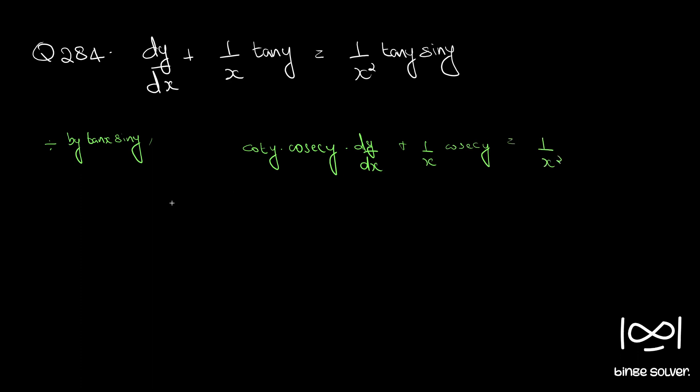Now if you put v equal to cosec y, so let's put minus cosec y, then we have dv/dx is equal to minus cosec y into cot y dy/dx.